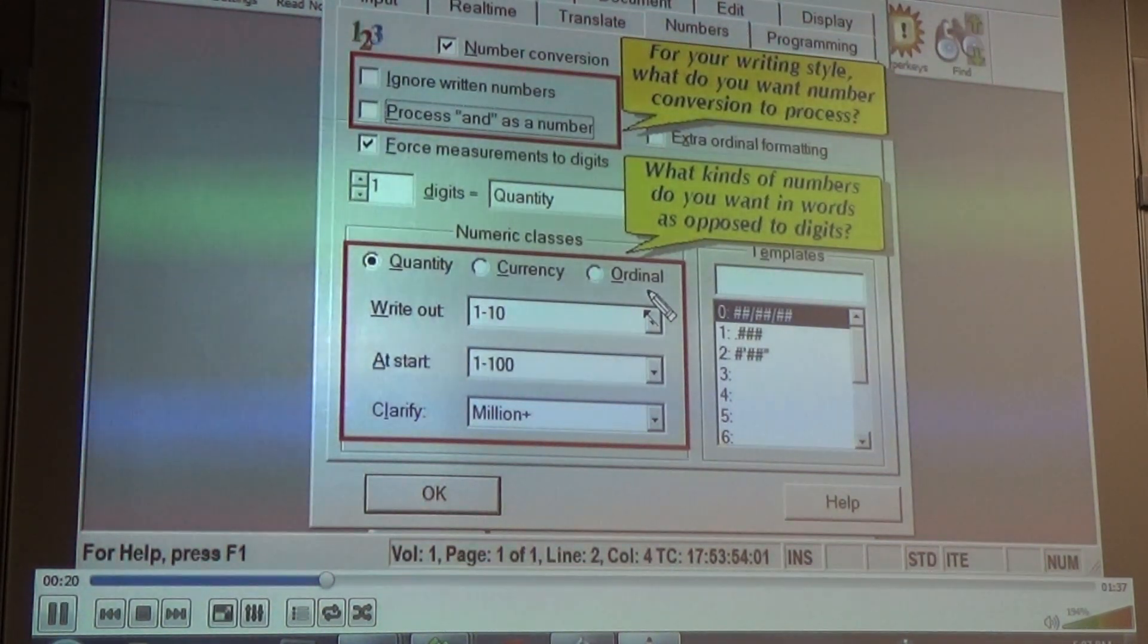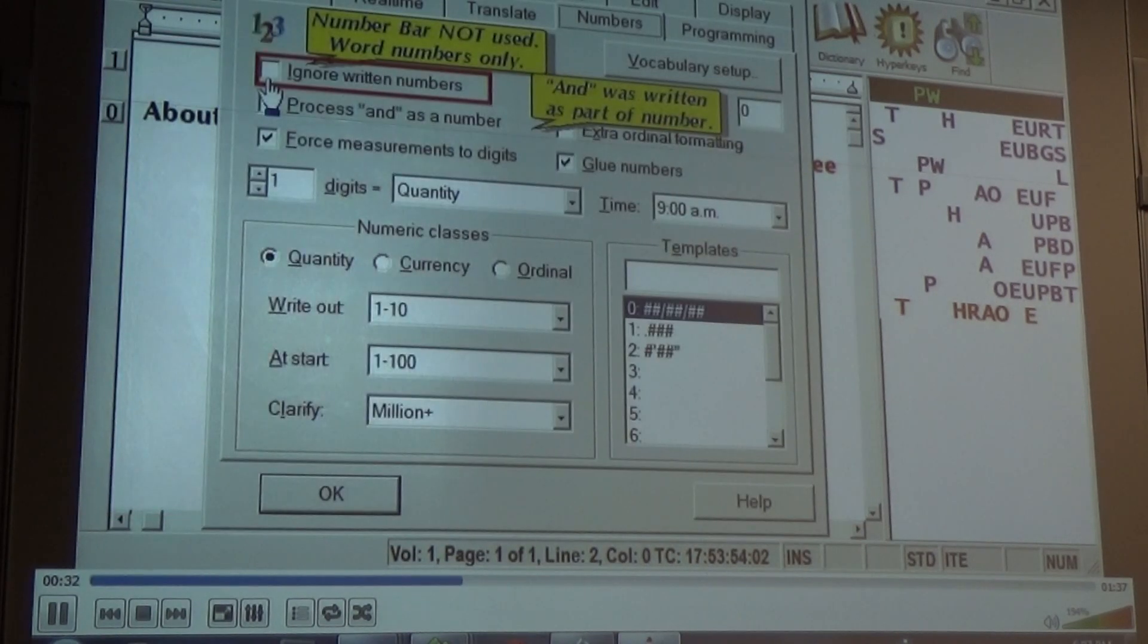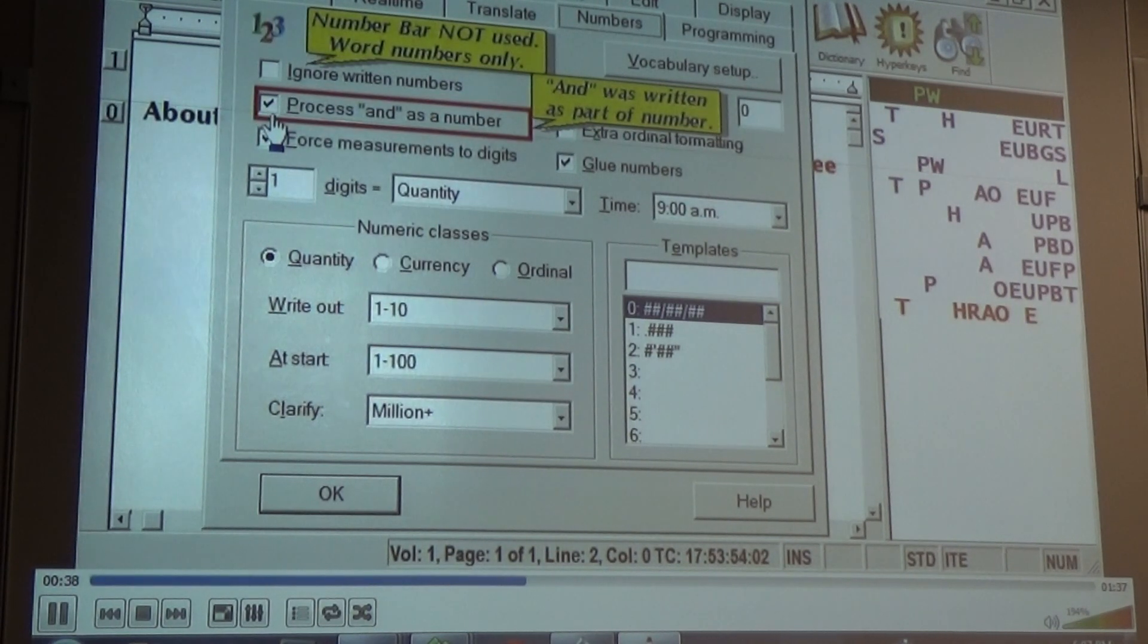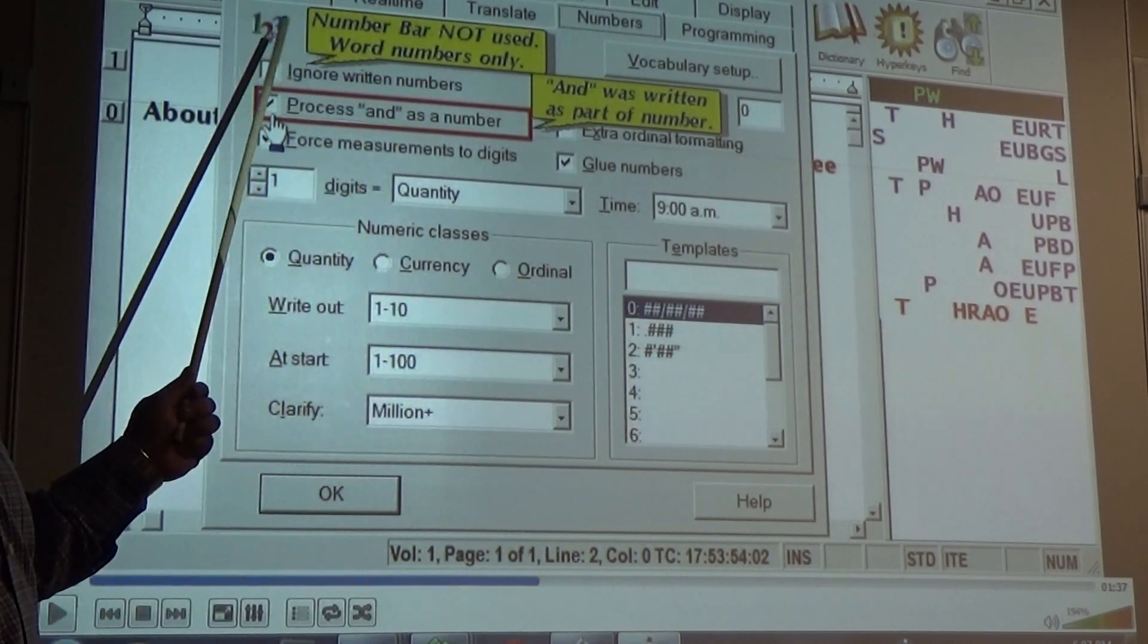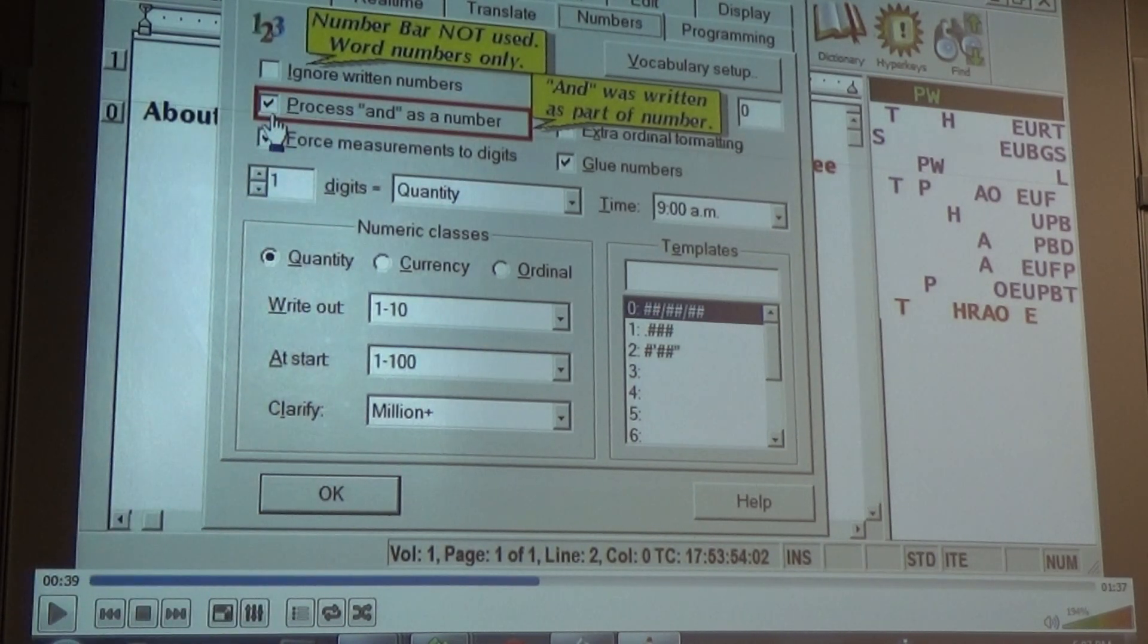What kinds of numbers do you want in words as opposed to digits? This first writer doesn't use the number bar and wrote the word 'and' when it was heard. So ignore written numbers is not turned on, but process 'and' as part of a number is turned on. So that's what you need. So if you write out your numbers, you do not need that checked. But if you write it and they say $311 and you write 'and', then it's going to process 'and' as a number. So it's just going to leave it out.